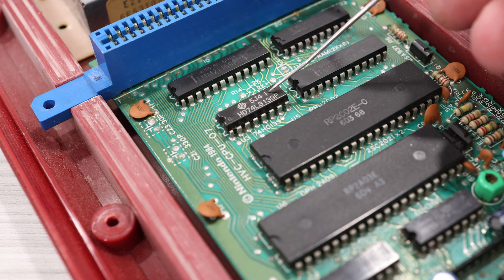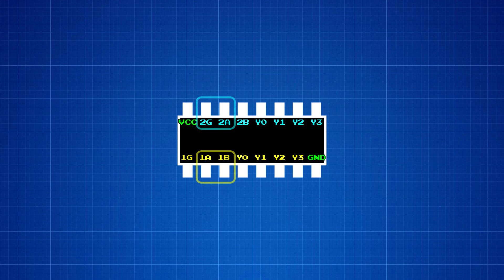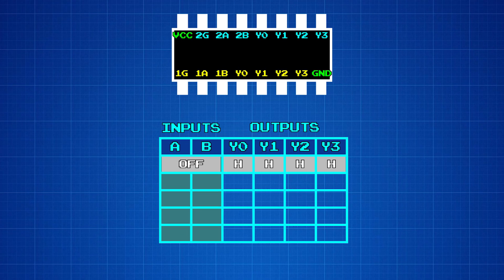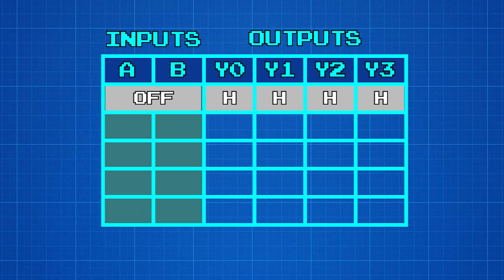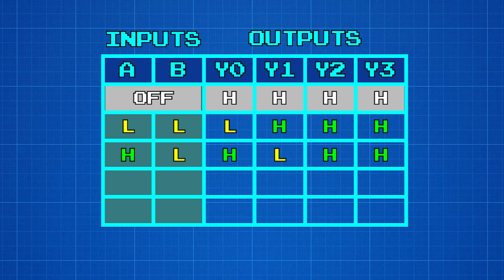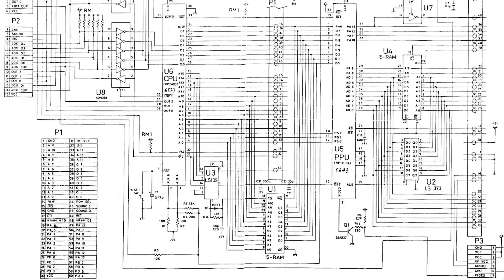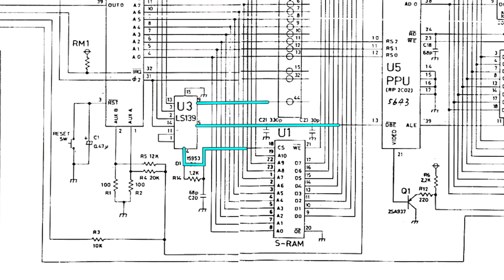And that's this chip here, a 74LS139, which is labeled as U3. There are two separate and independent decoders on this chip. Each decoder has two inputs and four outputs. When the chip's turned off, all four output pins are held high. But when the chip's enabled, the state of the output pins depend on the input signals. If both inputs are low, then output pin 0 is low and the remaining output pins are high. If input pin A is high and B is low, then output pin 1 is taken low while the others remain high. When A is low and B is high, then output pin 2 is low. And when both A and B are high, output pin 3 is low. So you can see how different combinations of the input signals will select a different output line.